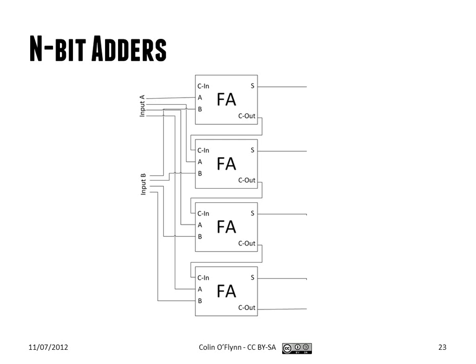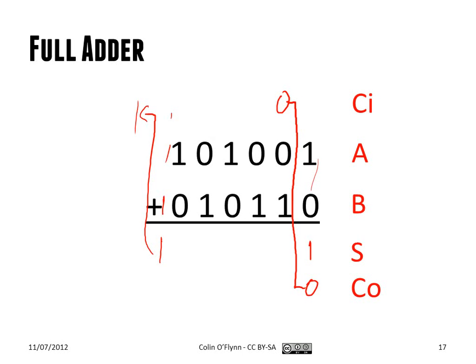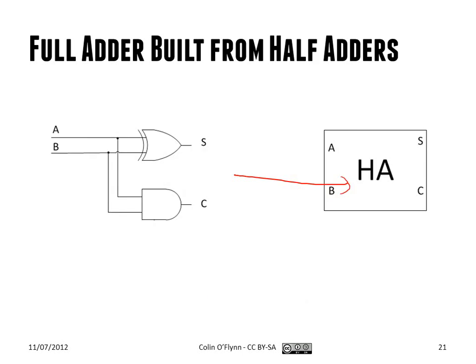To build n-bit adders, we chain a number of full adders together. This is exactly like what we were showing before — how addition works in that we add two numbers, bring the carry, add those two numbers plus the carry to get a sum, bring the carry up, add these to get a sum, get a carry, and bring the carry up. So the carry is chained to the next column.